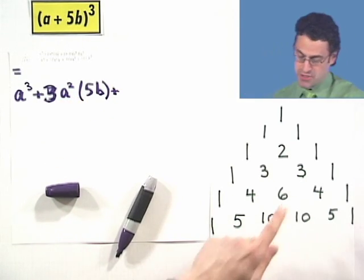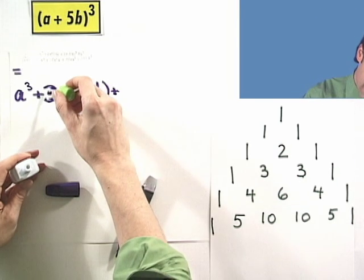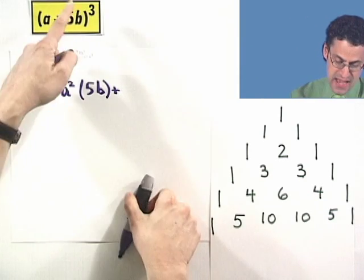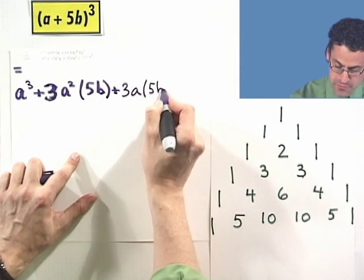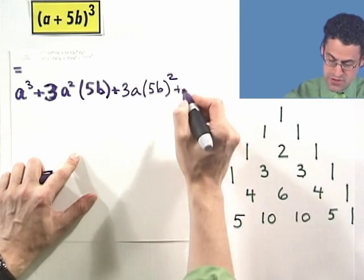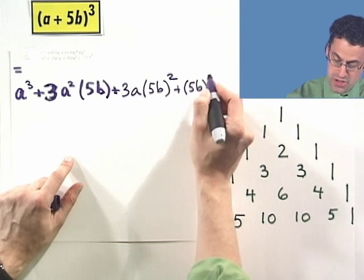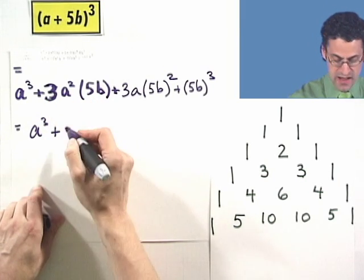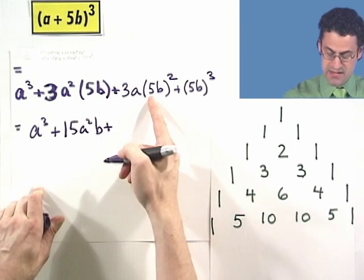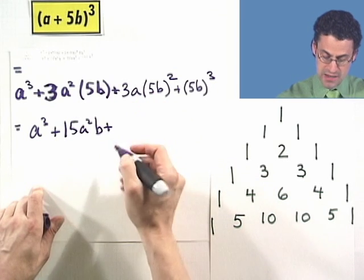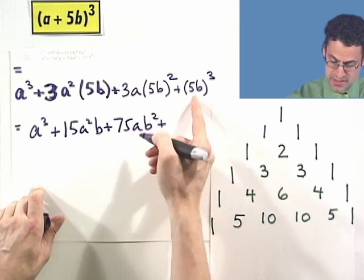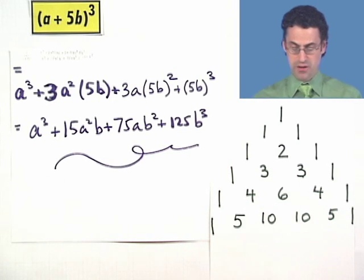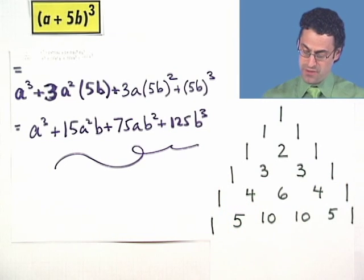So, if we now take the next coefficient, the next coefficient is going to be 3 as well, and what are we going to have? We're going to have now a just to the first power, and then we're going to have 5b quantity squared, because that's the value of y. So, we're going to have 3a to the first power, 5b quantity squared, plus the final coefficient is a 1, times just 5b all cubed. Now, we've got to clean that up a little bit, so this equals a cubed, plus 3 times 5 is 15, a squared b, plus, and here I have a 25, once I square the 5, times 3 is 75, a b squared, plus, and then 5 cubed is 125b cubed.